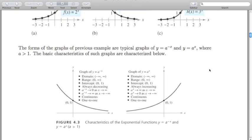Here are some basic characteristics of these two graphs. On the left we have y equals a to the minus x, and on the right we have y equals a to the x. This gives you some characteristics where your domain is negative infinity to infinity, your range is 0 to infinity, and so on. This just kind of gives you some properties.